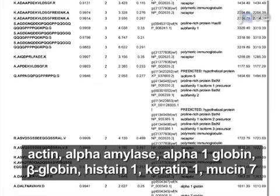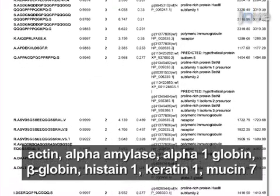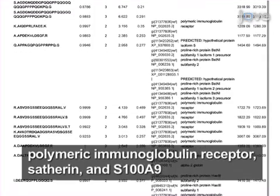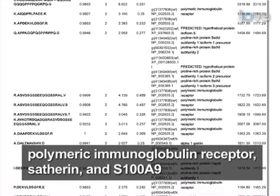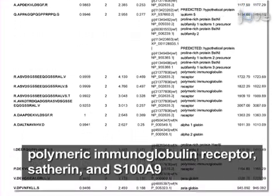alpha-amylase, alpha-1-globin, beta-globin, histane-1, keratin-1, mucin-7, polymeric immunoglobin receptor, Sathrin, and S100A9.